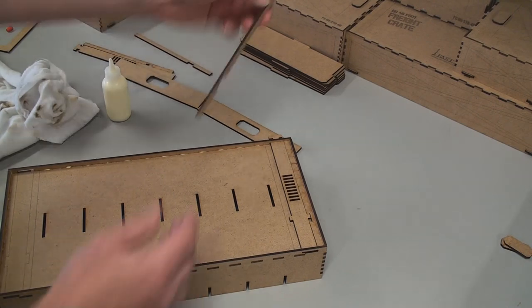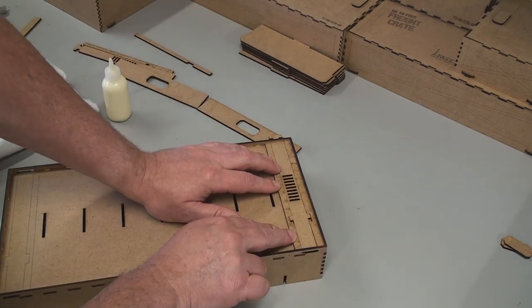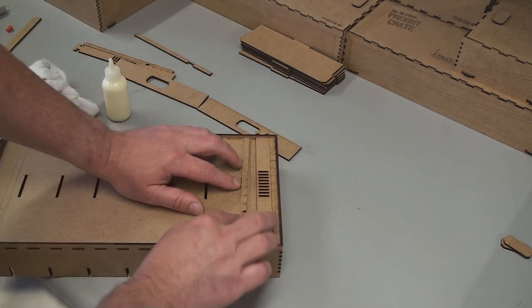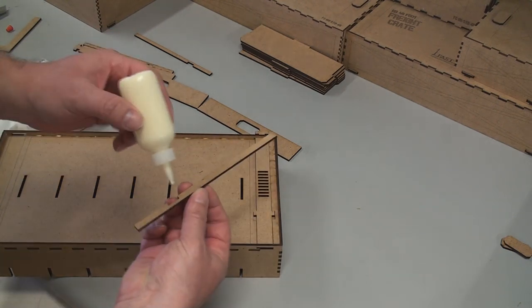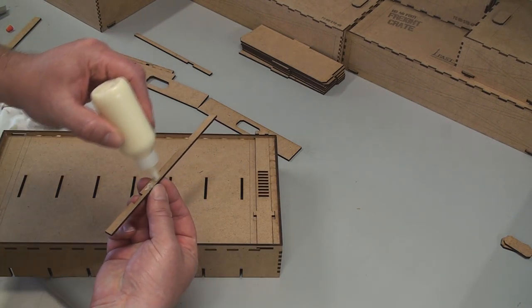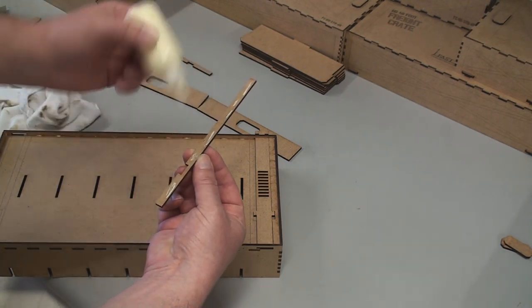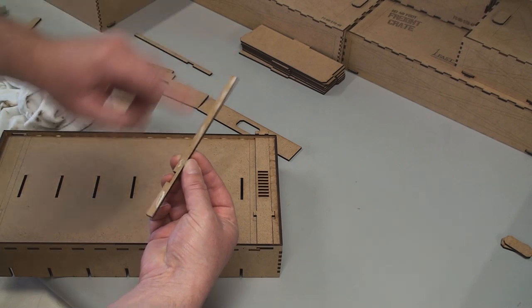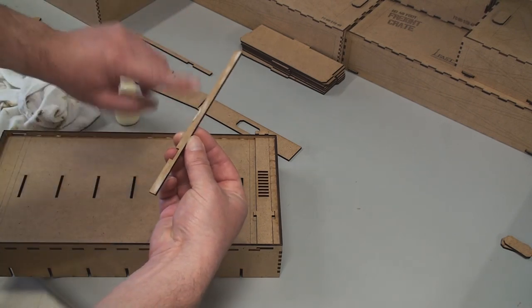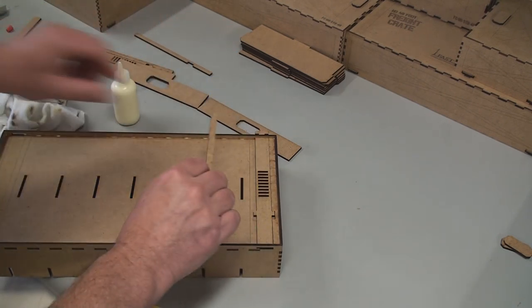And now we're going to add the third and final keeper that goes here. And again, very small amount of glue. I'm going to put it on the actual part this time. Here, and then a little bit there. And then I'm going to smear it on as well. Keeps it from oozing out when I put it in place.